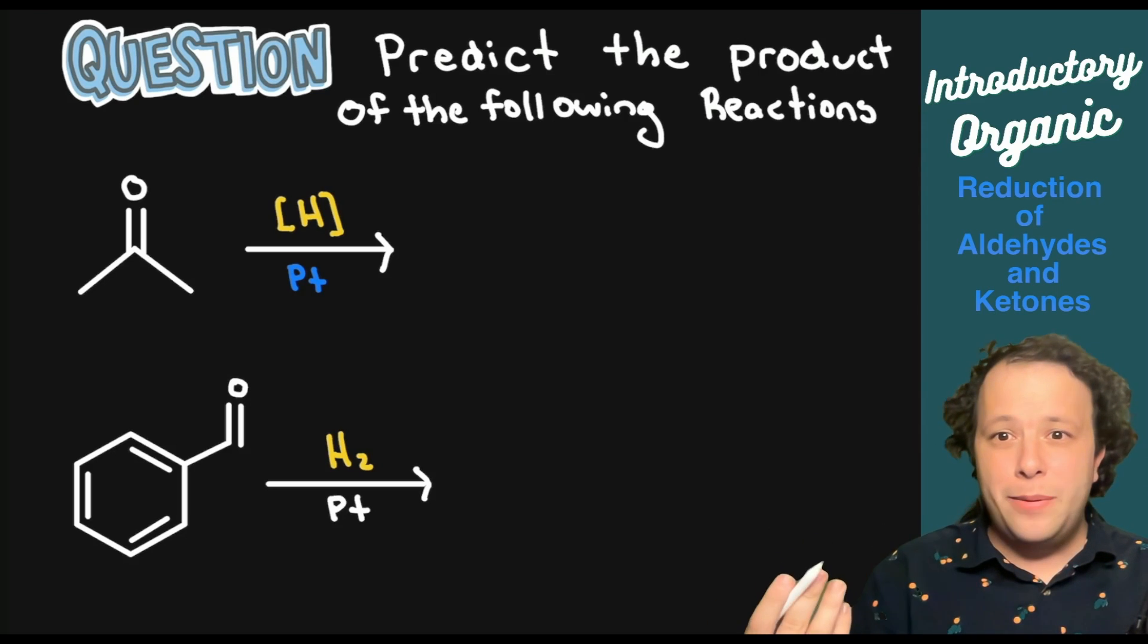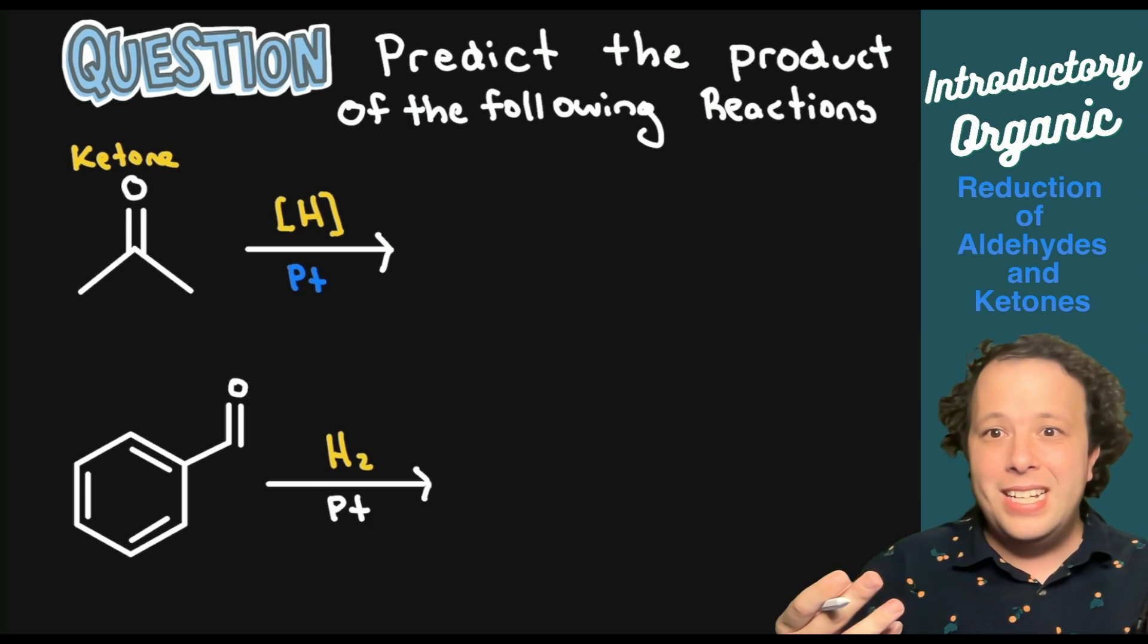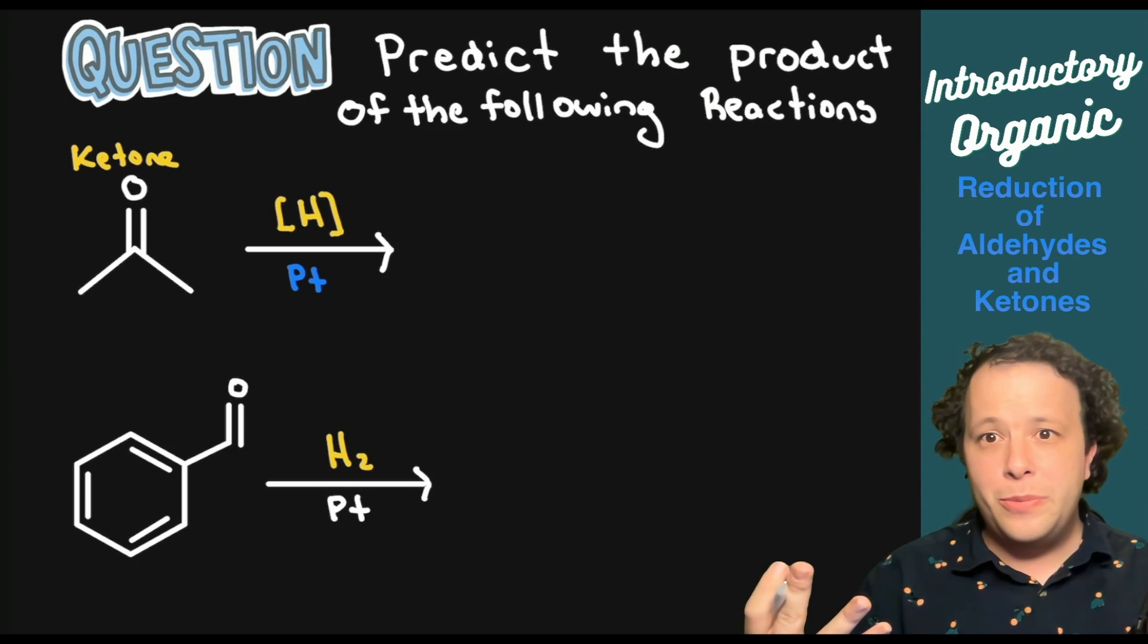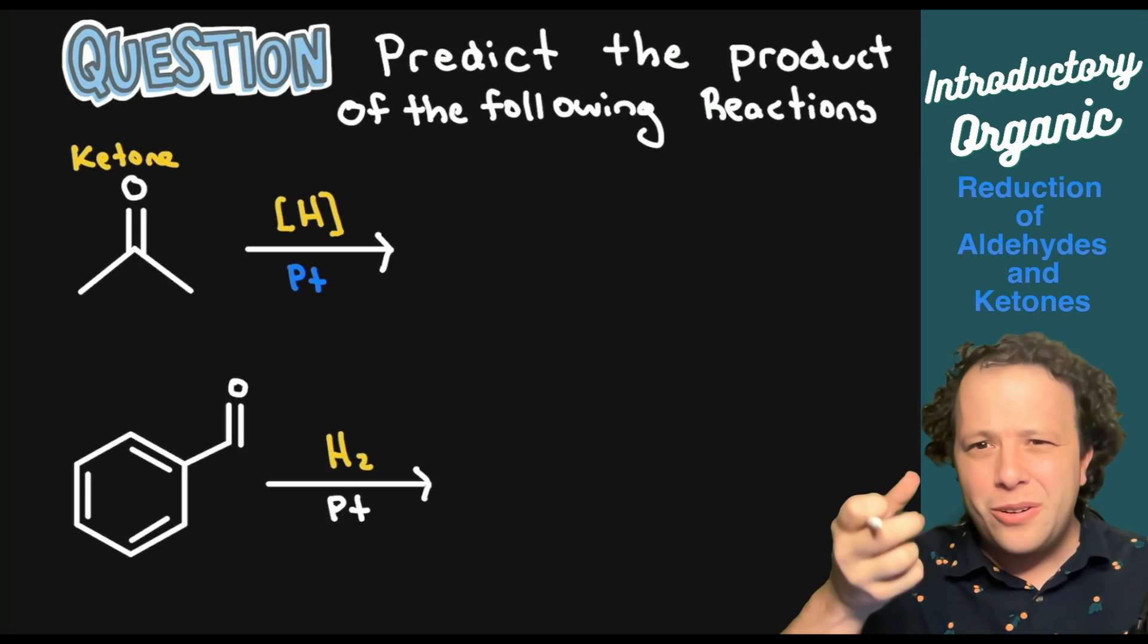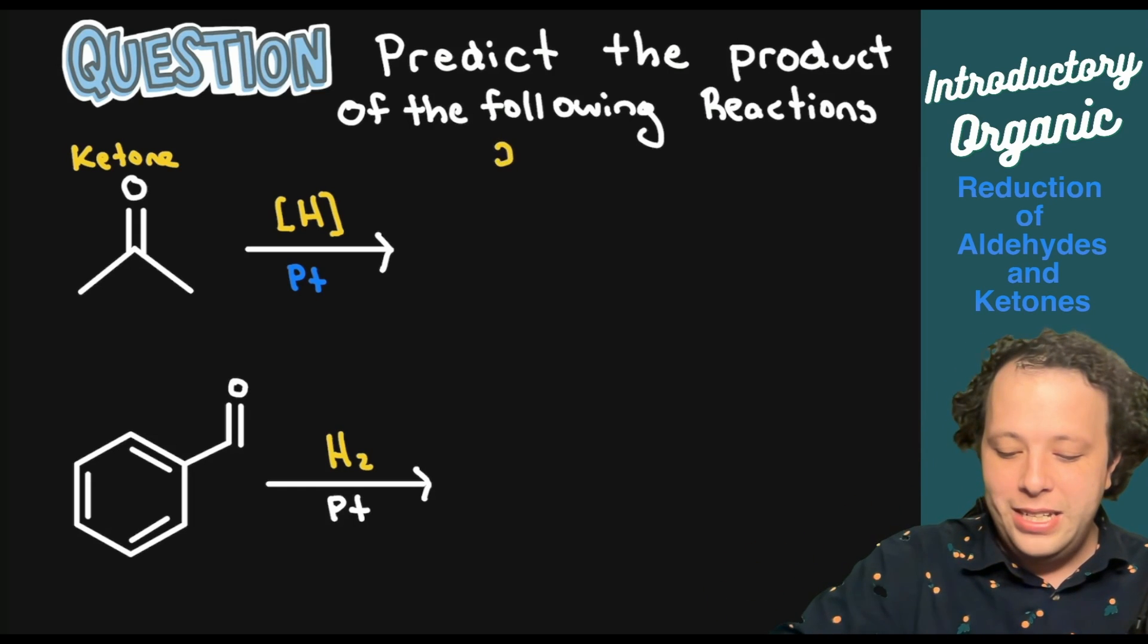We can see we have the C double bond O in the middle of a chain. Whenever it's in the middle, this is our ketone. In this case, what does the ketone turn into? If you can remember how the functional group is changing, it helps guide your thinking to pick your final answer.